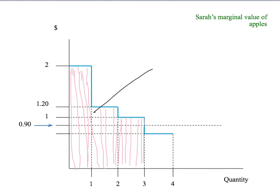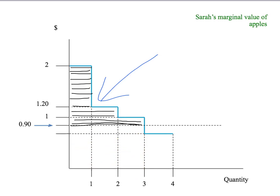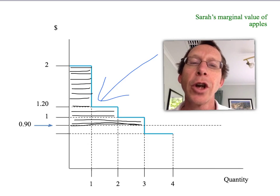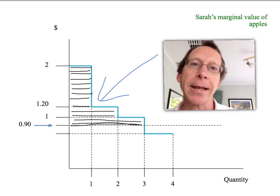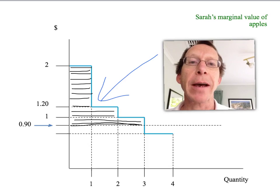We can show that using her marginal value or demand curve. The pink shaded area is Sarah's total value from three apples — the area under her marginal value curve up to three apples. The orange shaded area is the amount Sarah pays: $0.90 times three apples. The black shaded area — the difference between total value and the amount Sarah pays — is Sarah's consumer surplus from buying three apples at $0.90 per apple, equal to exactly $1.50. Because Sarah's marginal value curve is her demand curve, consumer surplus is also the area under her demand curve, above the price she pays, up to the quantity she consumes.